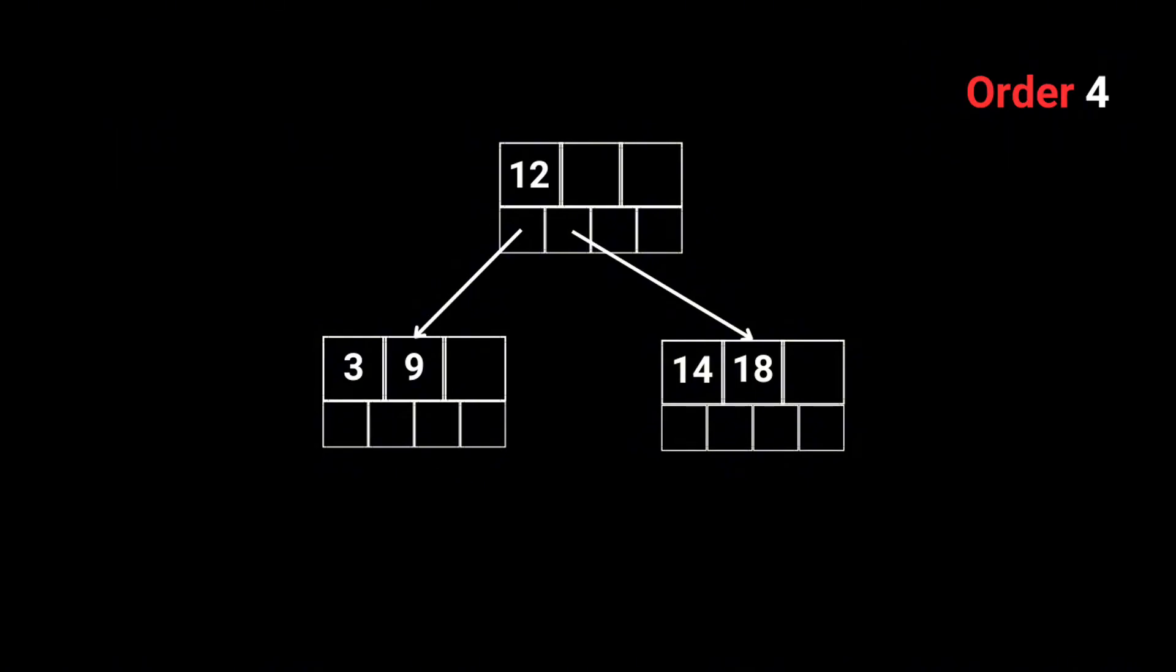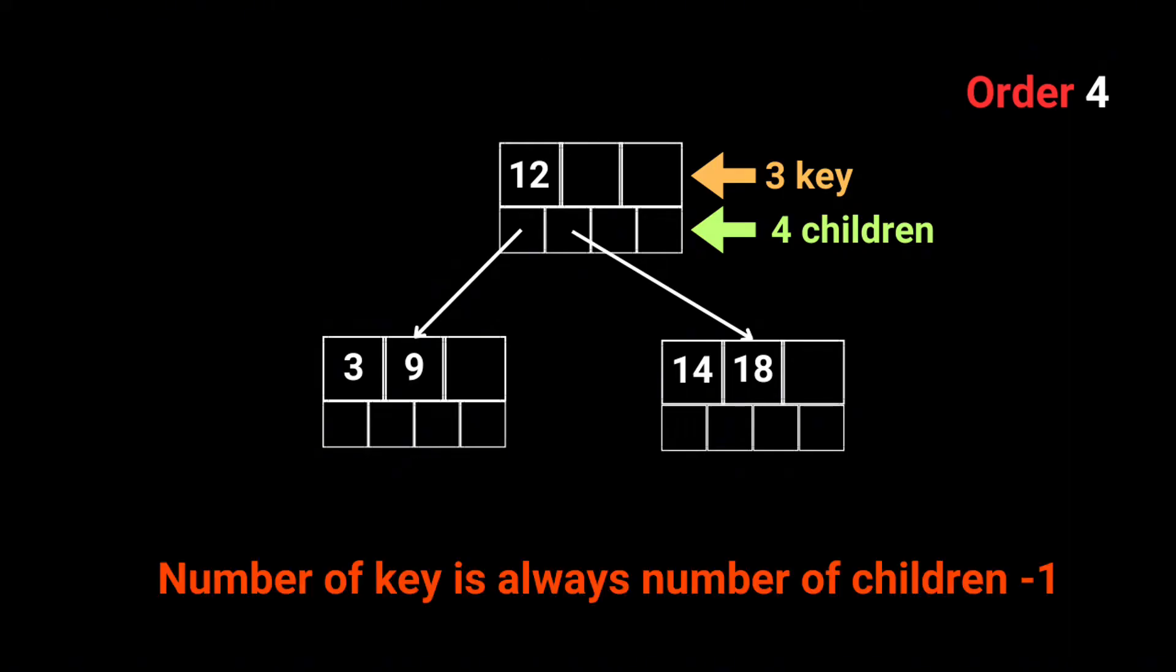In this B plus tree example, the order is four, meaning it can have up to four children and three keys, since the number of keys is always one less than the number of children.